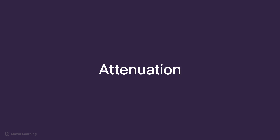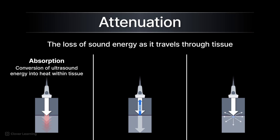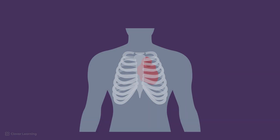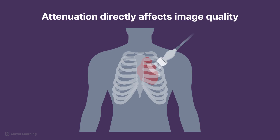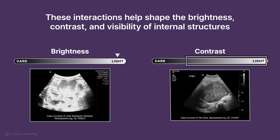There are also terms related to attenuation, which is the loss of sound energy as it travels through tissue. Three types of attenuation are absorption, which is the conversion of ultrasound energy into heat within tissue; reflection, which is sound bouncing back to the transducer; and scatter, which occurs when the ultrasound beam is deflected in multiple directions. Understanding attenuation is crucial because it directly affects image quality. Too much attenuation can limit how deeply we can see into the body, while reflection and scatter determine how much useful information returns to the transducer to create a diagnostic image. These interactions help shape the brightness, contrast, and visibility of internal structures on the ultrasound display. Each of these terms plays a role in understanding how sound behaves in the body and affects image formation. We will be going into depth about each of these terms in other lessons.